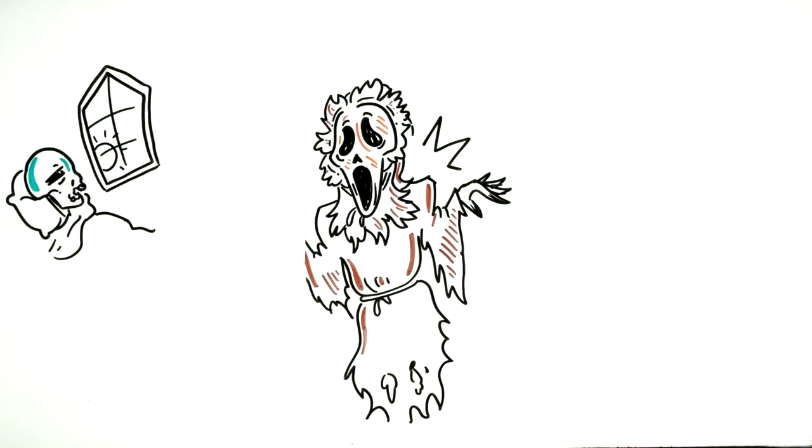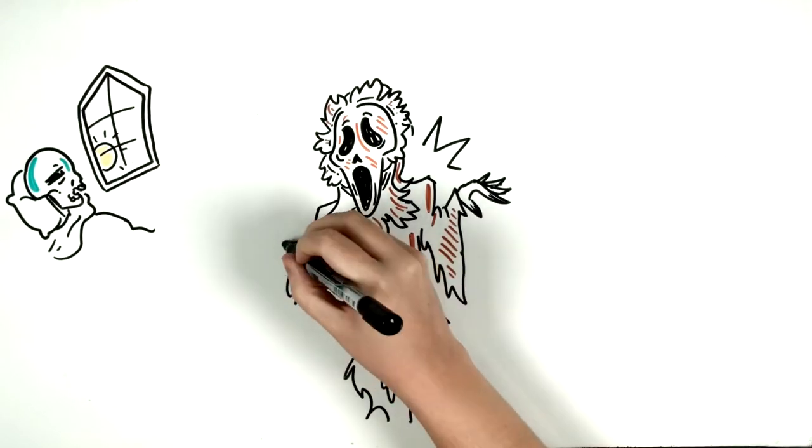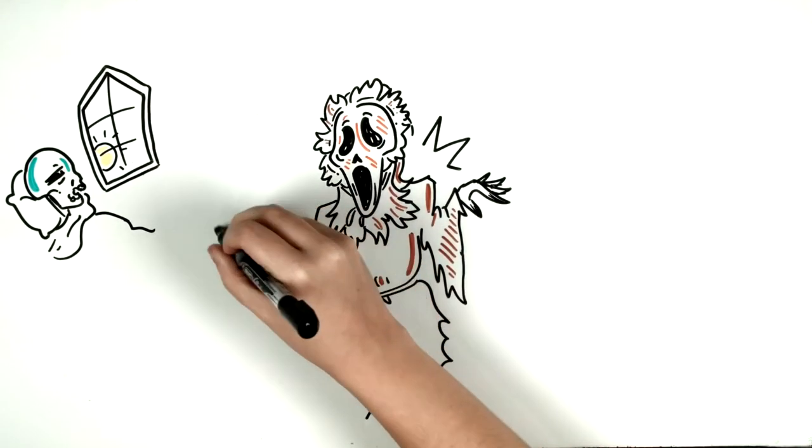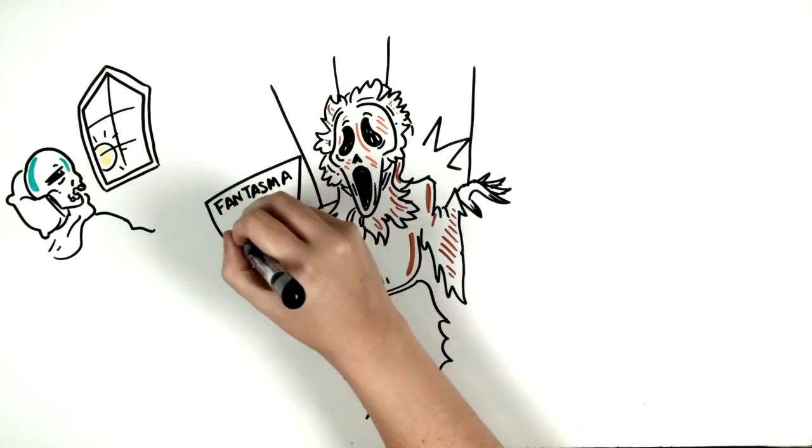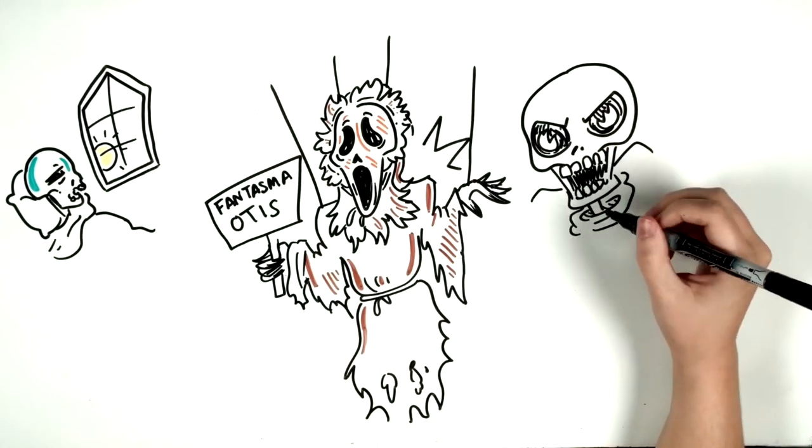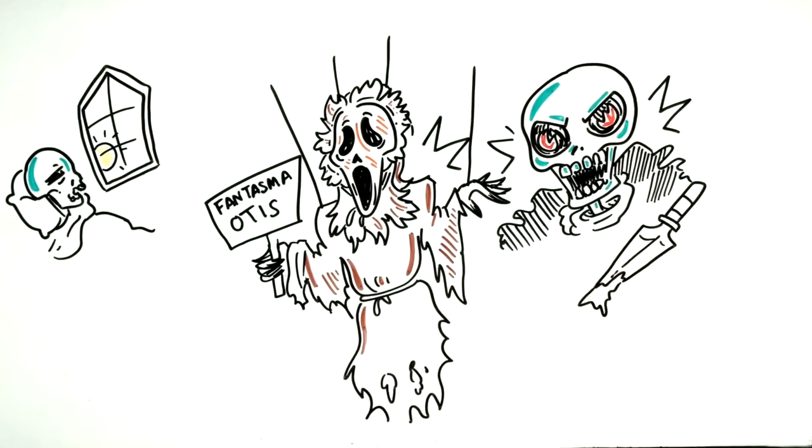He left his room at dawn, and with the light coming through the windows, he discovered that the ghost in the hall was false, put up by the Otis family. By the side next to it, furious, they saw that after the rooster crowed twice there would be bloody crimes and murders.